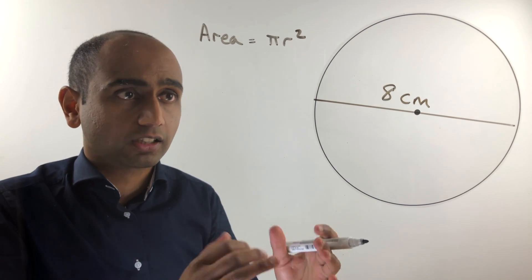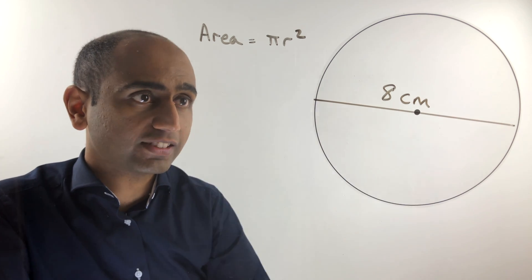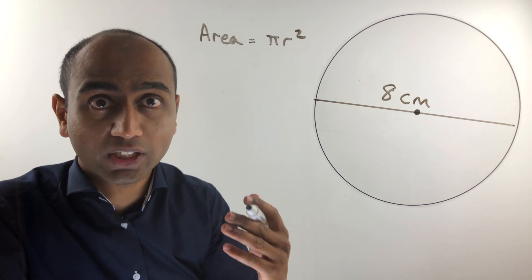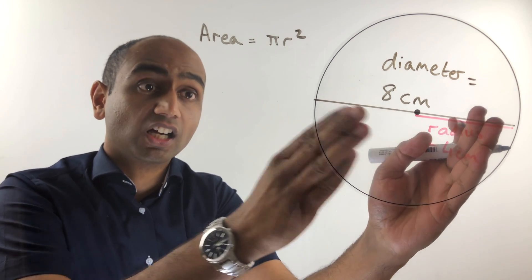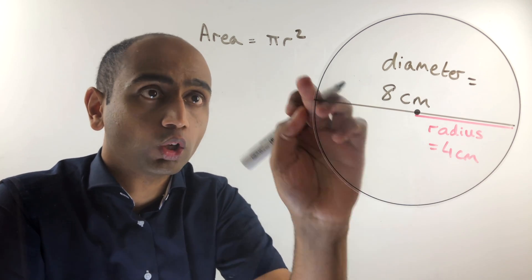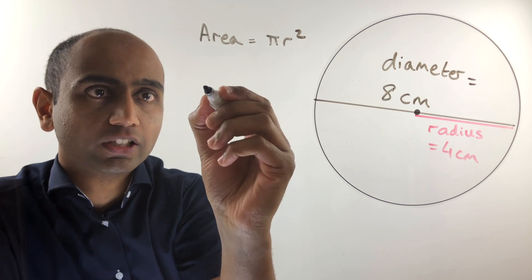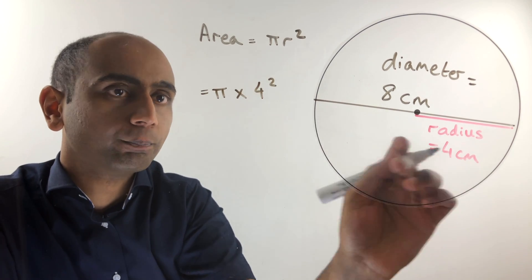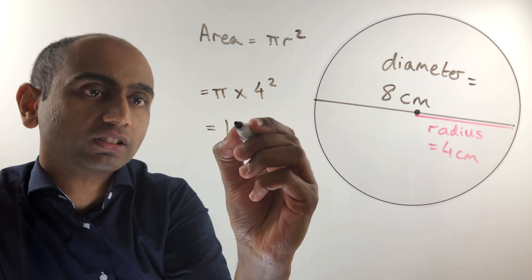Let's take a look at the second example. We want to find the area of this circle. It has a diameter of 8 centimeters, but to find the area we need the radius, so let's work that out first. The radius is half of the diameter, so half of 8 gives us 4. We substitute 4 in for r, so the area is pi times 4 squared. 4 squared is 16, giving us 16 pi.